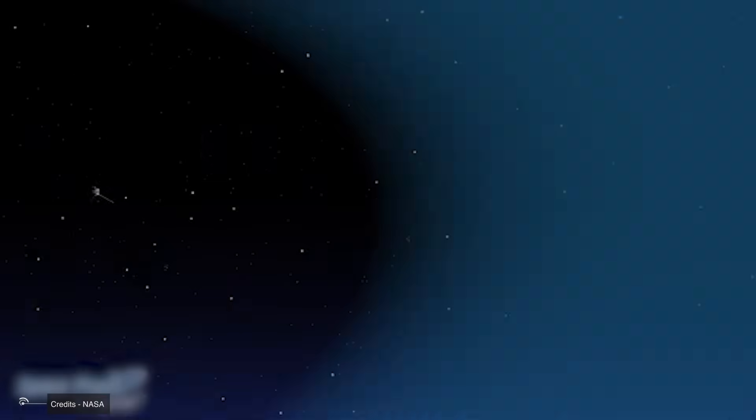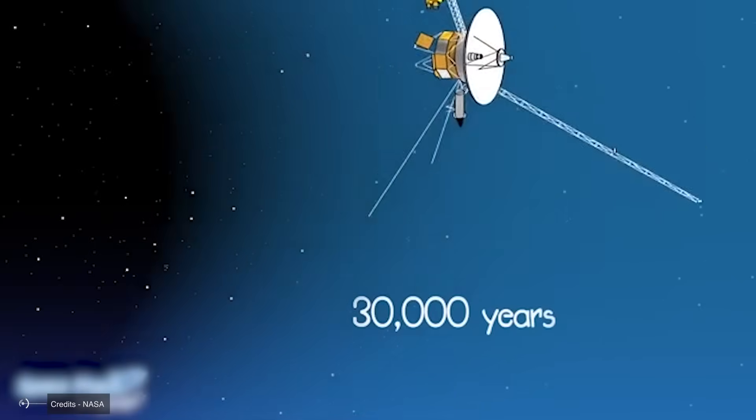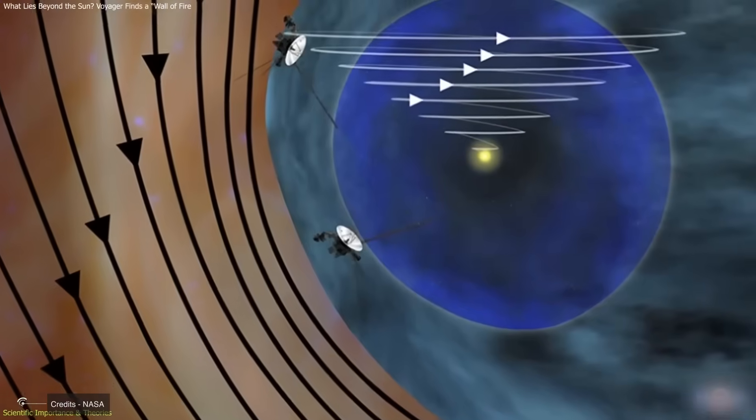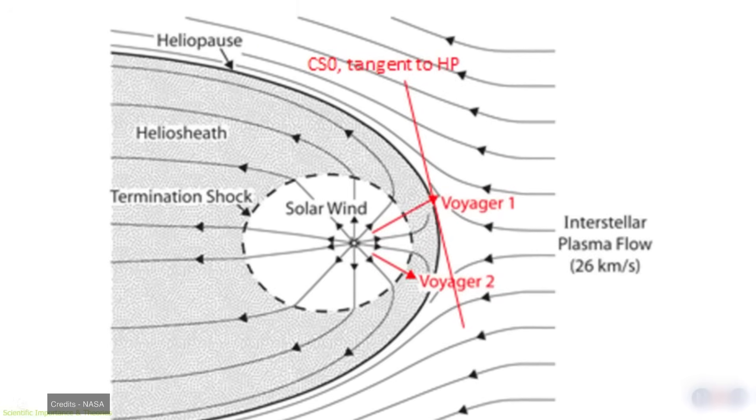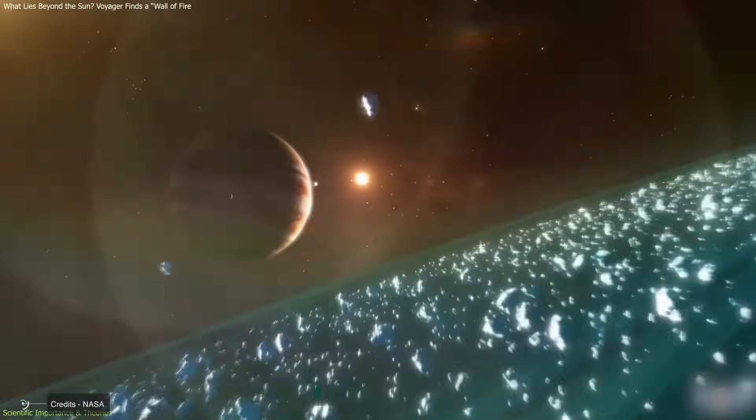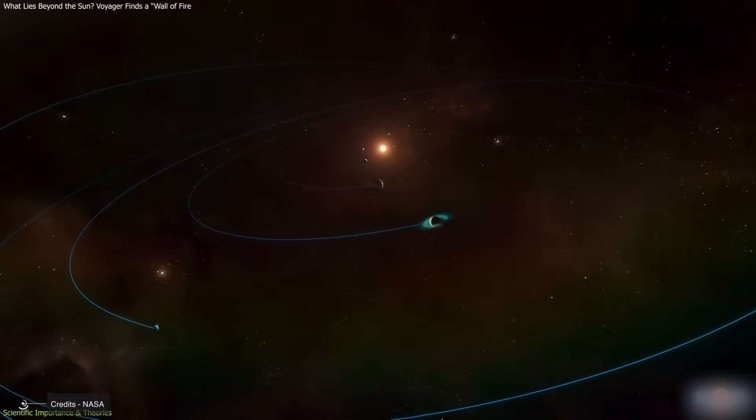At that speed, it would take at least 30,000 years to completely leave what we might call the extended solar system. So yes, the Voyagers have left the influence of the solar wind, but they are still very, very far from leaving the solar system altogether. What they have crossed is the threshold of the heliopause, not the absolute edge of the solar realm.